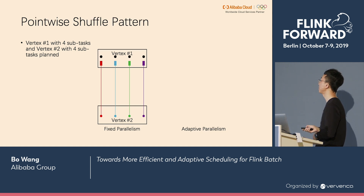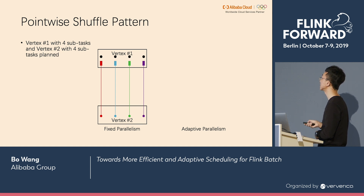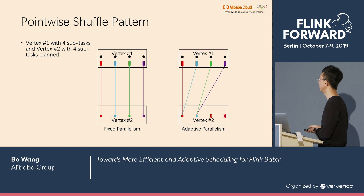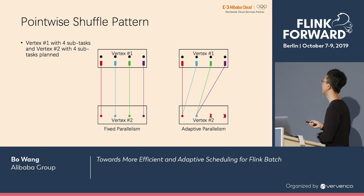There is another shuffle pattern between vertices which is point-wise. To keep it simple, we draw the case where the parallelism of both vertices is the same, meaning each sub-task of vertex 1 produces one partition for each sub-task of vertex 2. When the parallelism drops to 2, the first sub-task possesses the red and blue partition, the second sub-task possesses the green and purple partition, and the last two sub-tasks are cancelled.